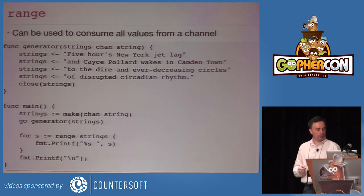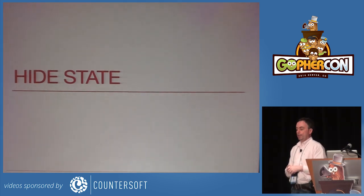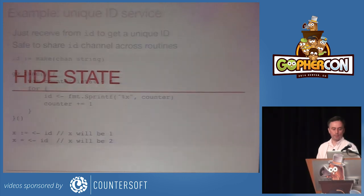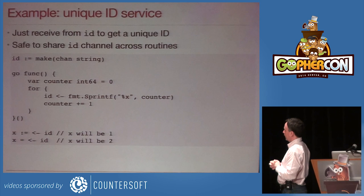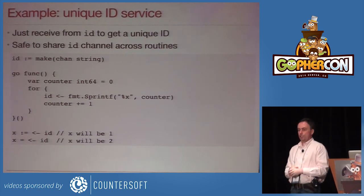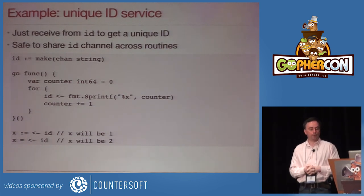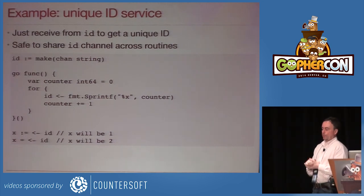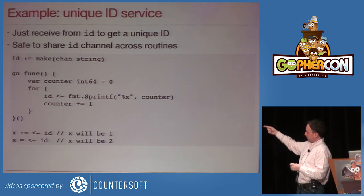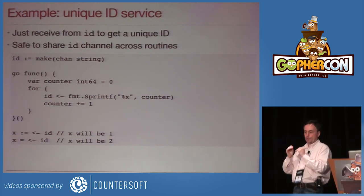Another good thing from the CSP world: the internal state of some process can be completely hidden and you just communicate using channels. You can do something really simple like this — you need to generate unique IDs, so you make a goroutine that is always willing to give you a new ID on a channel. I've done a sequential one here, but it could be a UUID or whatever generator you want. Wherever you need an ID, you ask on that channel and get a unique ID. There's no question about getting the same ID twice: the goroutine transmits the current ID and then adds one — there's a synchronization, no ambiguity.